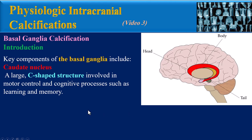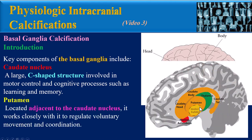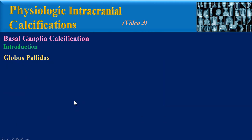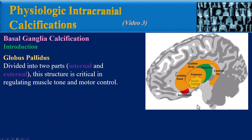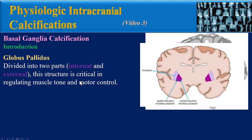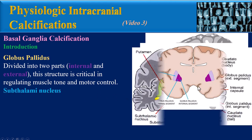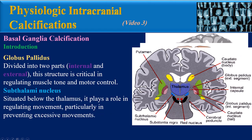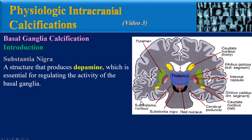The putamen is located adjacent to the caudate nucleus and works closely with it to regulate voluntary movement and coordination. The globus pallidus is divided into two parts — internal and external — and is critical in regulating muscle tone and motor control. The subthalamic nucleus is situated below the thalamus and plays a role in regulating movement, particularly in preventing excessive movements.